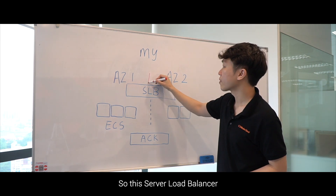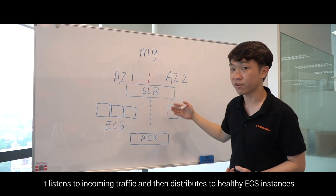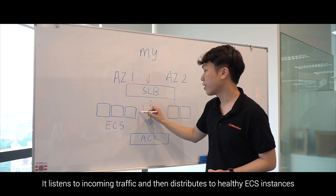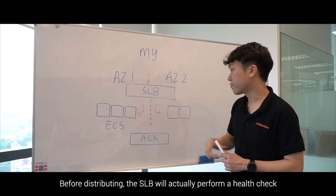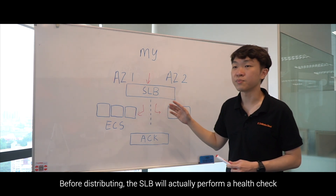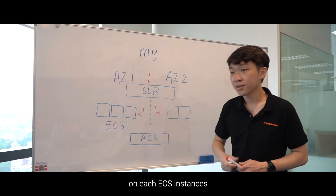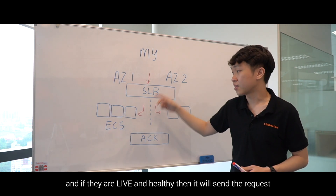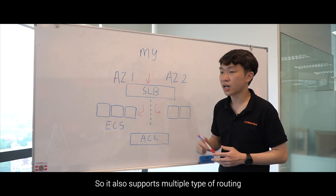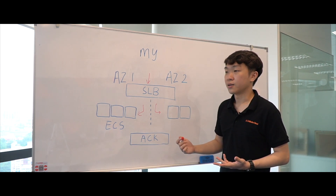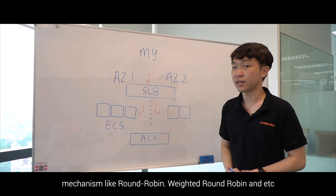The Server Load Balancer listens to incoming traffic and then distributes it to healthy ECS instances. Before distributing, the SLB performs a health check on each ECS instance, and if they are alive and healthy, it will send the request. It also supports multiple types of routing mechanisms like round robin, weighted round robin, etc.